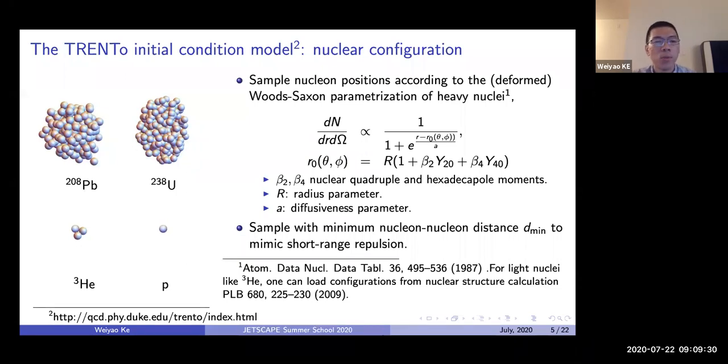Instead of just sampling one nuclear distribution, the TRENTo model also introduces the minimum nucleon-nucleon distance, this d_minimum parameter. No two pair of nucleons are sampled with distance closer than this distance to mimic certain short-range repulsion. Of course, this procedure is only for heavy nuclei. For light nuclei such as helium, you cannot just use the Woods-Saxon distribution. In these cases, you can load configurations from, for example, nuclear structure calculations.